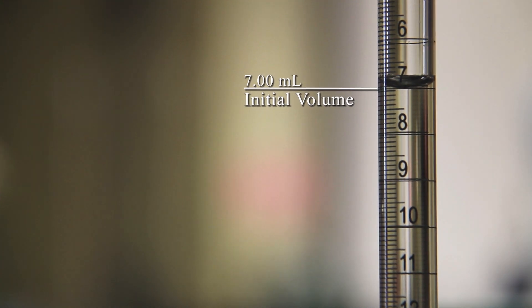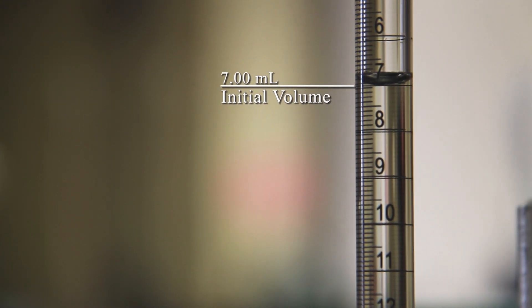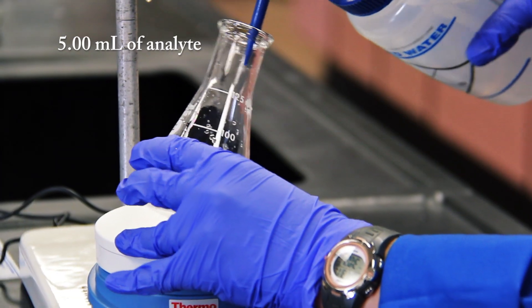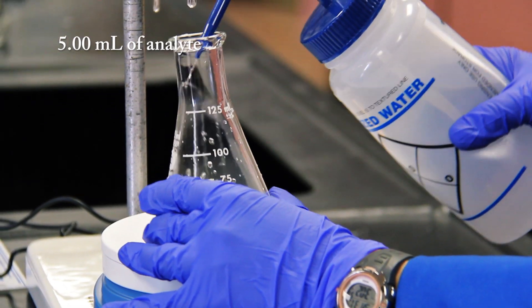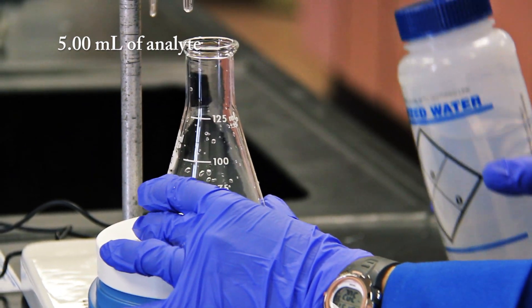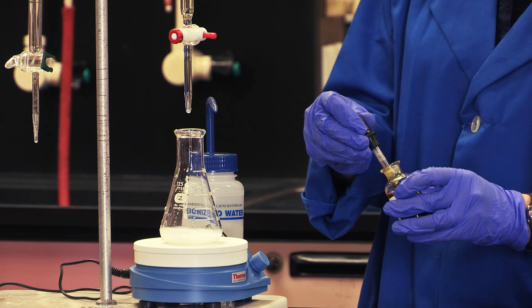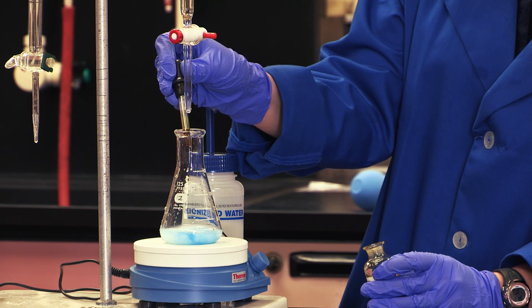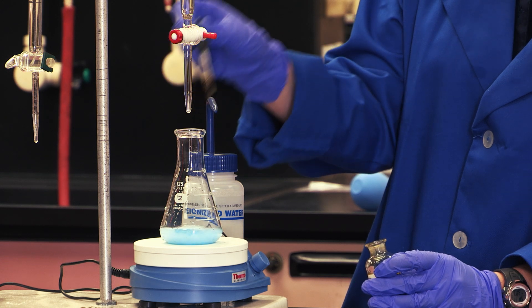The concentration of the acid is 0.6764 molar. Now we'll put a known amount of our analyte, in this case 5 milliliters, in an Erlenmeyer flask, add some water to increase the volume. Place a few drops of the bromothymol blue in the flask, and we're ready to titrate.